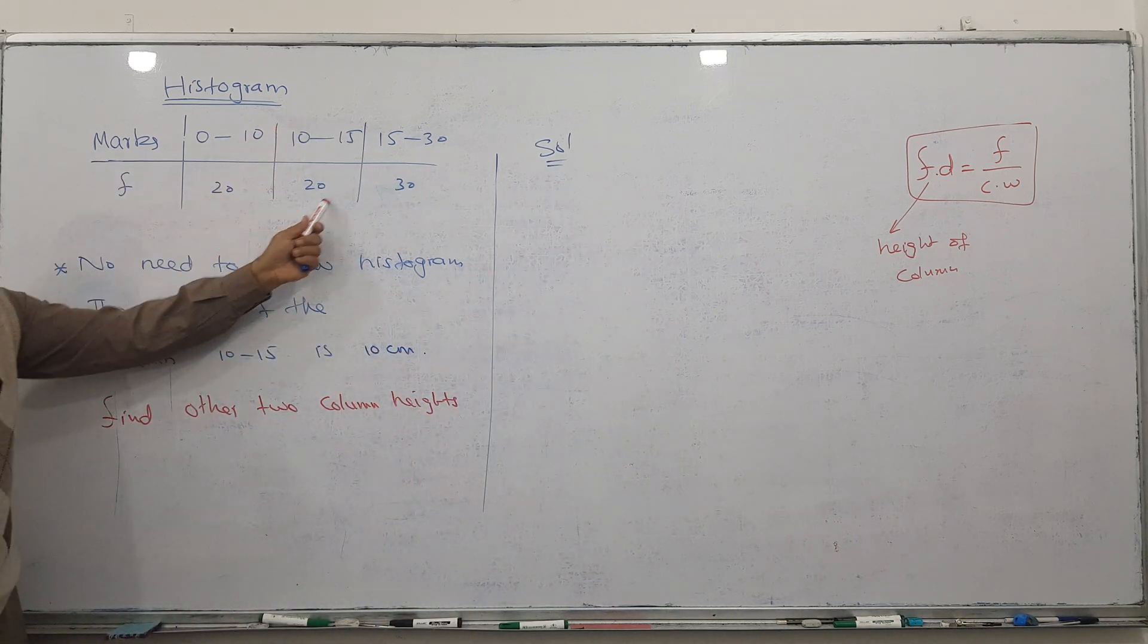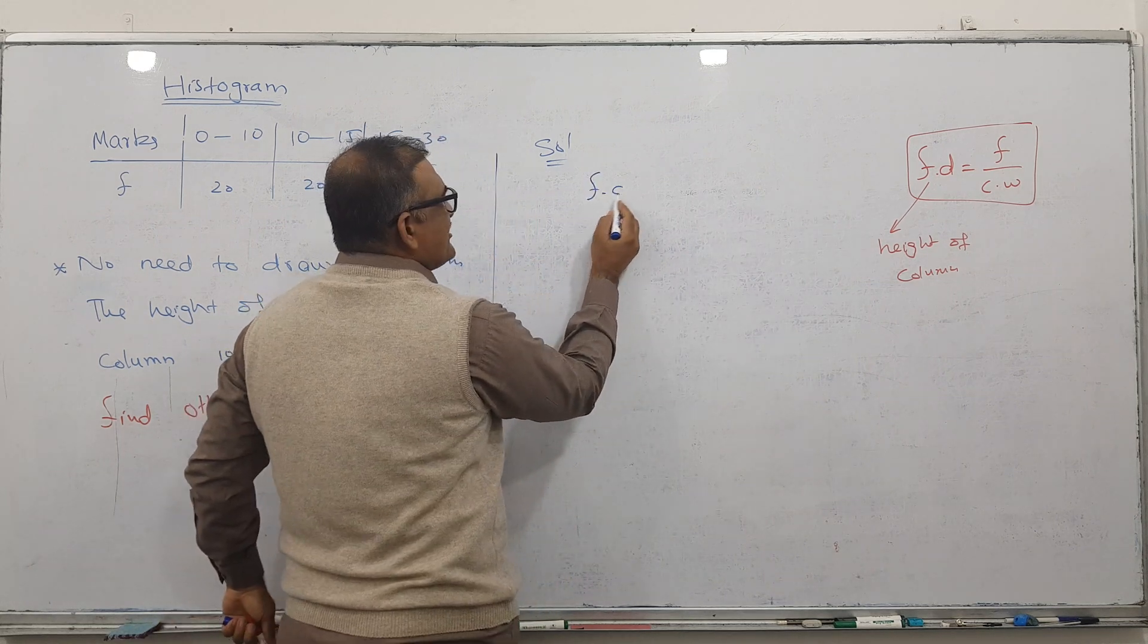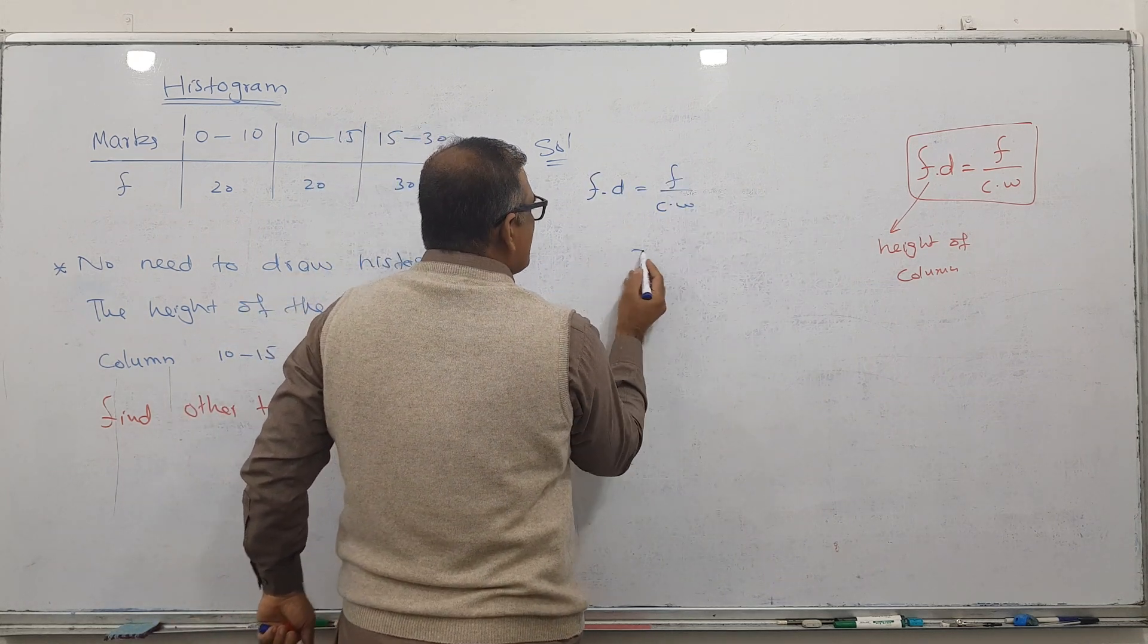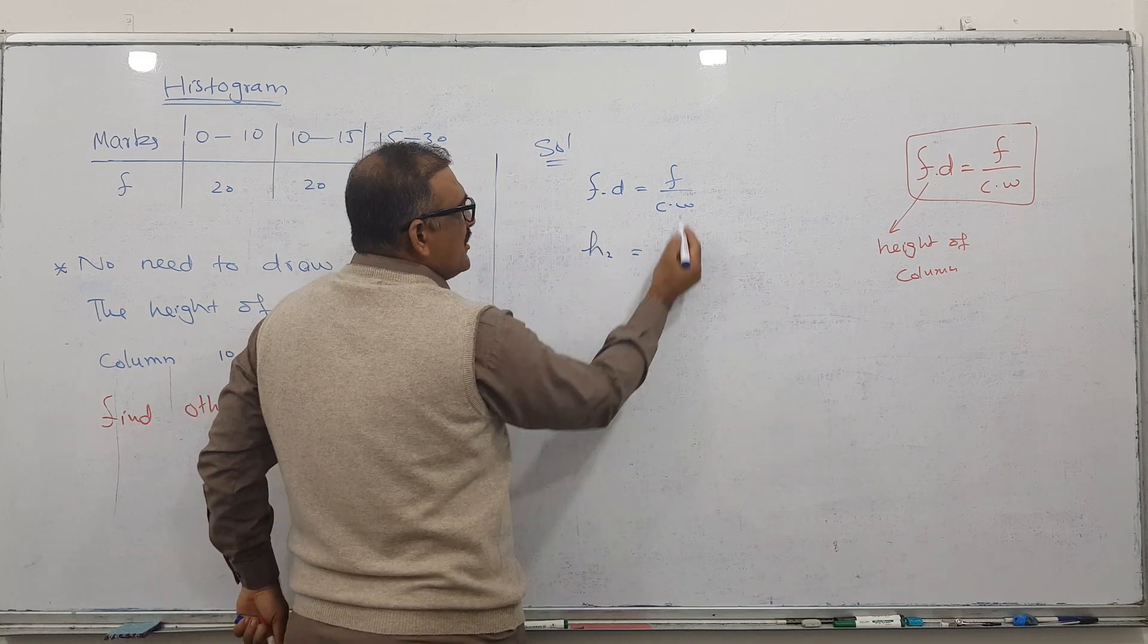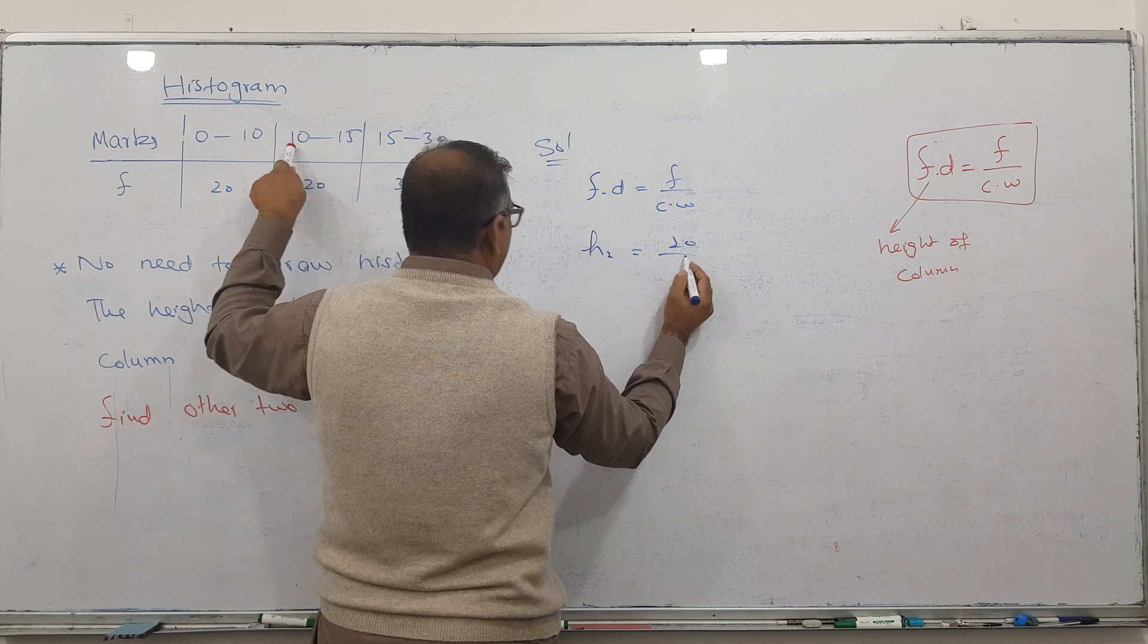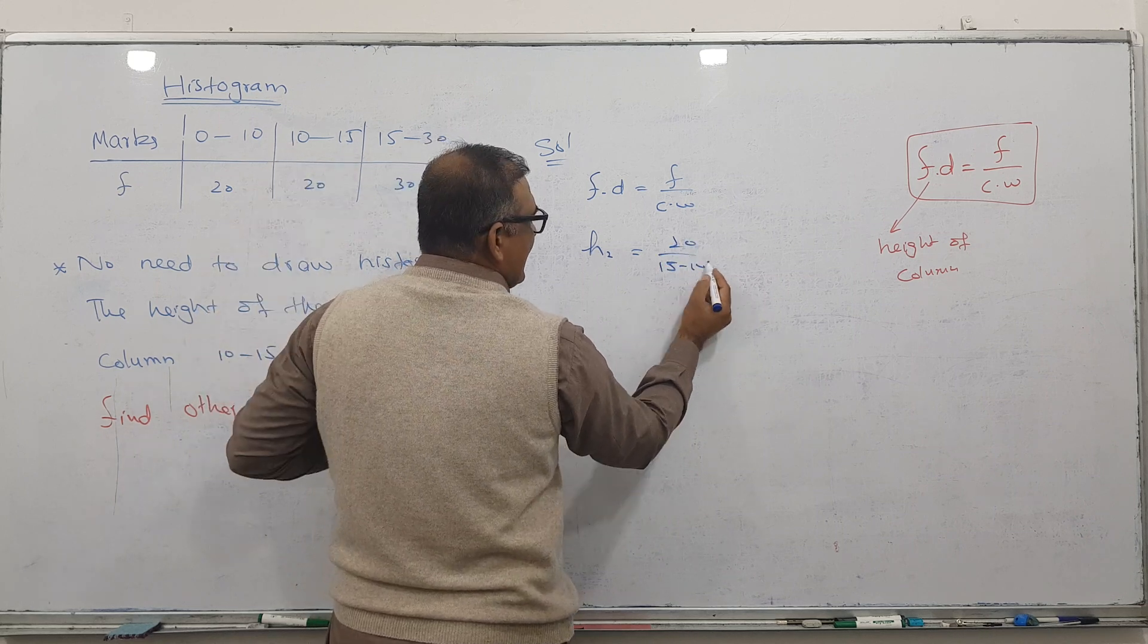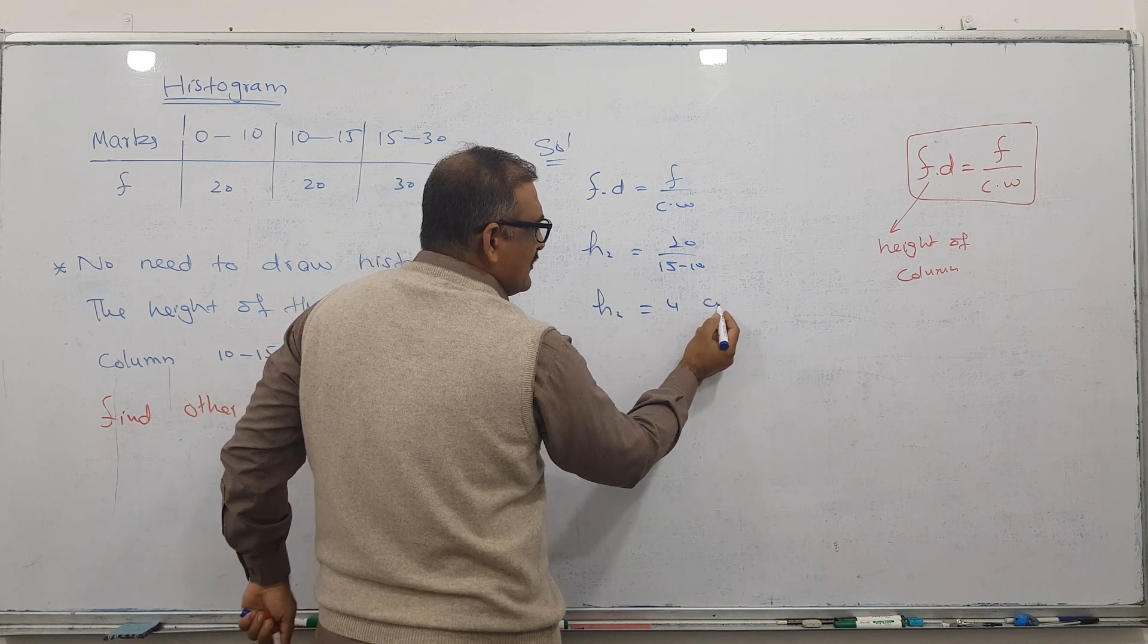The formula all of you know: frequency density equals frequency divided by class width. This is also called height. So I'm finding height 2. Frequency is 20, class width is 15 minus 10, and I got 4.